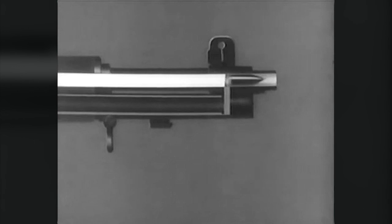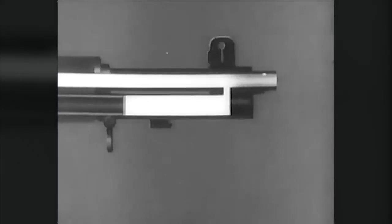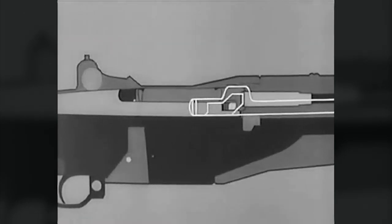The bullet travels along the barrel. Part of the exploding gases escape into the gas cylinder through the gas port, and this gas pressure drives the piston and operating rod back. The operating rod moves back about five sixteenths of an inch before it hits the operating lug. In other words, the projectile leaves the muzzle before unlocking begins.